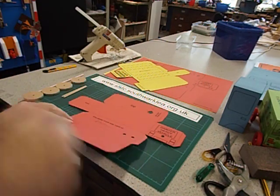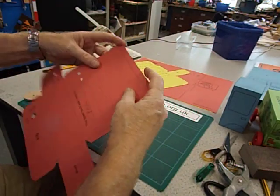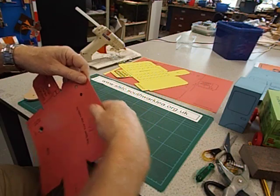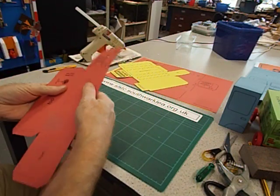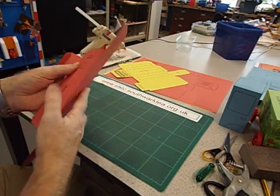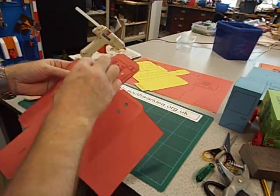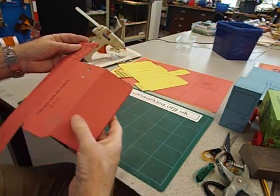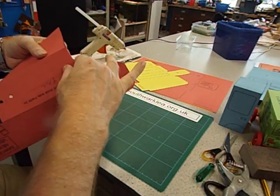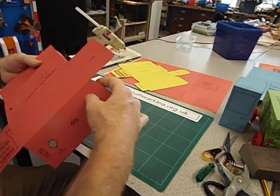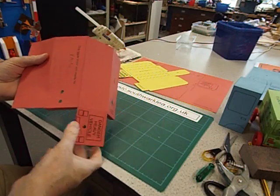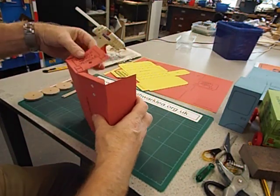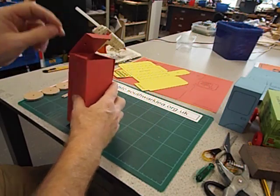And now we're going to fold up all these dotted lines. There are four long folds. Can you see how easily and accurately it folds because we've scored it? There's four long ones and eight short ones. You can see the net now coming together.